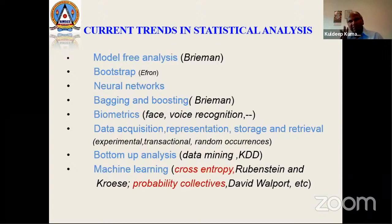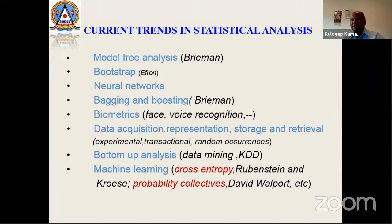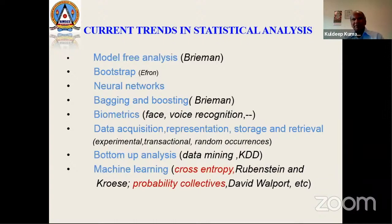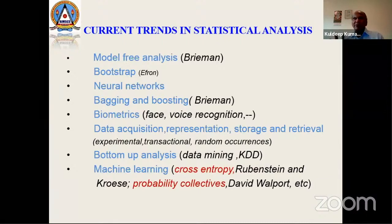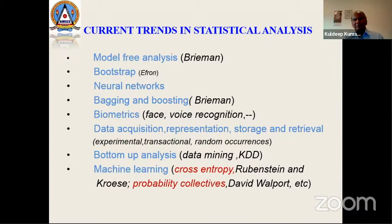About 11 years back, C.R. Rao presented a slide at a conference in Sri Lanka in 2010 — I was there. He said the future of statistical analysis is not what we have done in our BSc or MSc classes. He said model-free analysis, as given by Breiman — decision trees, random forest, tree-net, bootstrap, neural network, bagging and boosting, biometrics, face recognition, data mining, KDD, machine learning, cross-entropy — is the future. He predicted about 10 years back that the future of statistics lies in machine learning, which is actually true.